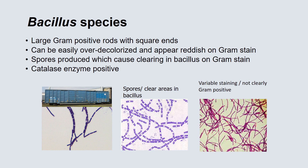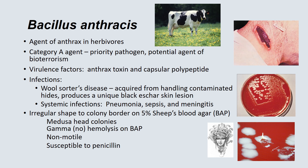Bacillus species is a large gram-positive rod with square ends. It can easily be decolorized, so you have to be very cautious when reading gram stains because it can over-decolorize and almost look like a gram-negative rod. All Bacillus species produce spores, which can sometimes be visualized on gram stains — you can see a void of gram staining where the spore is present. All Bacillus species are catalase enzyme positive.